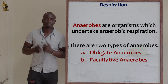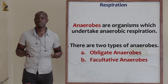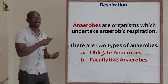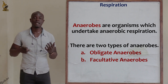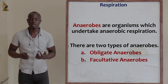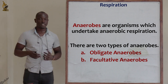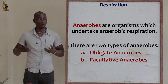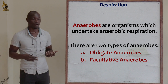Organisms which obtain energy through anaerobic respiration are mainly referred to as anaerobes. Anaerobes are organisms which mainly undertake anaerobic respiration. We have two different types of anaerobes: the first type is obligate anaerobes, and the second type is facultative anaerobes.